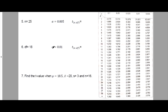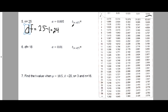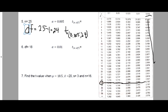Example 5: We are given n equals 25 and alpha equals 0.005. The degrees of freedom equals 25 minus 1 equals 24. So we look up T sub 0.005, 24. Locating df equals 24 and alpha equals 0.005 on the table, the T-value is 2.797.